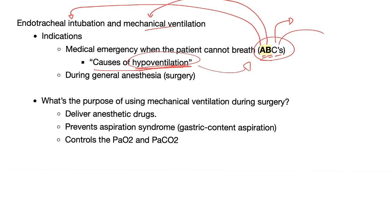During general anesthesia — that is, during major surgery — what's the purpose of using a mechanical ventilator? It delivers the anesthetic drug, prevents aspiration syndromes, and controls PaO2 and PaCO2 — controlling oxygenation and pH.